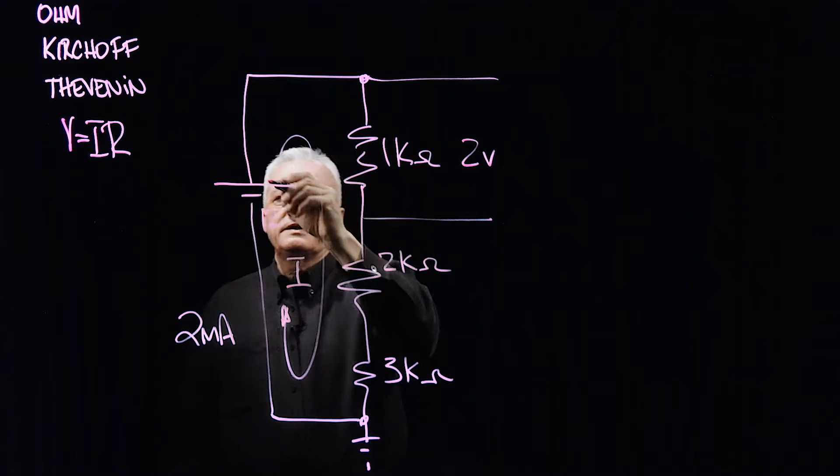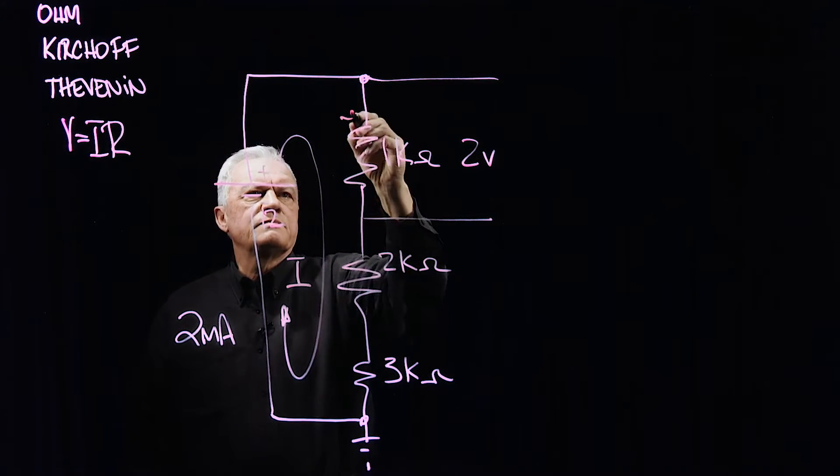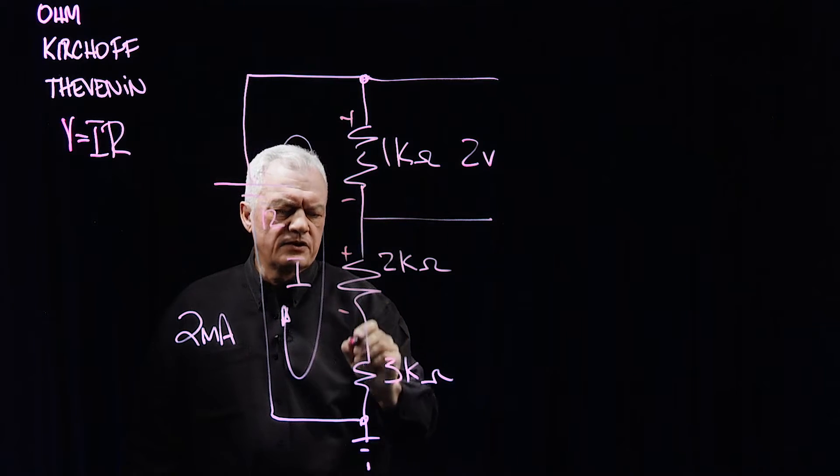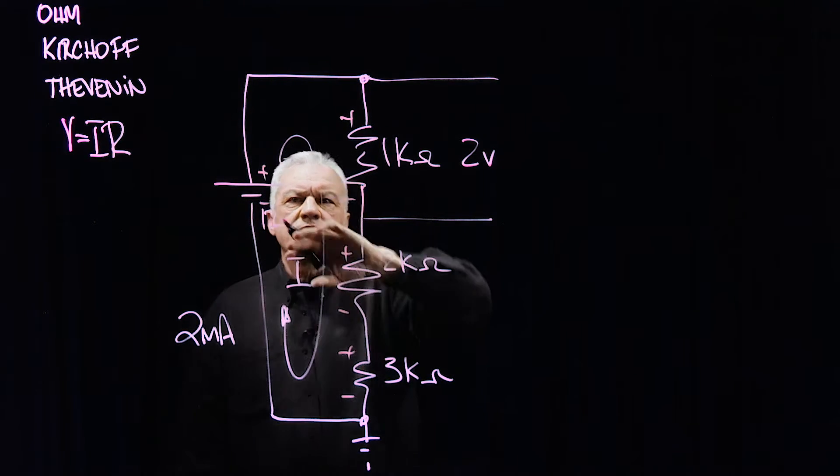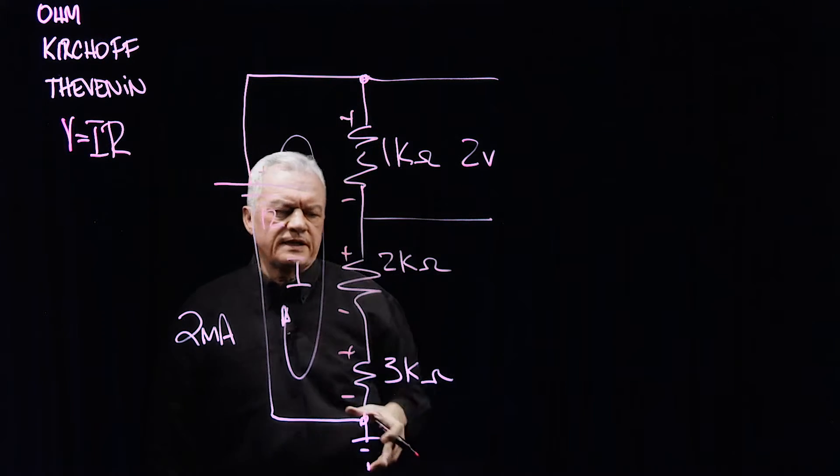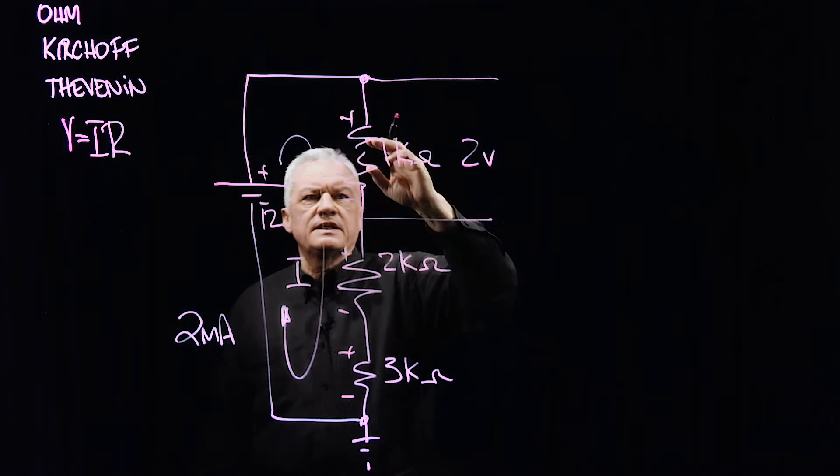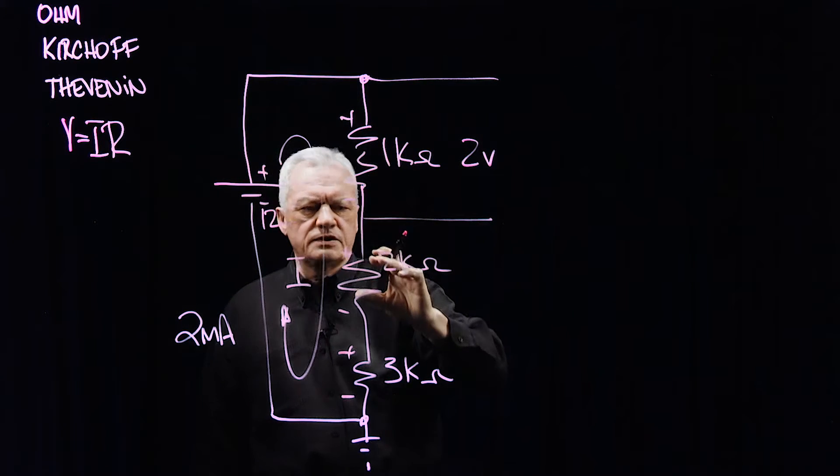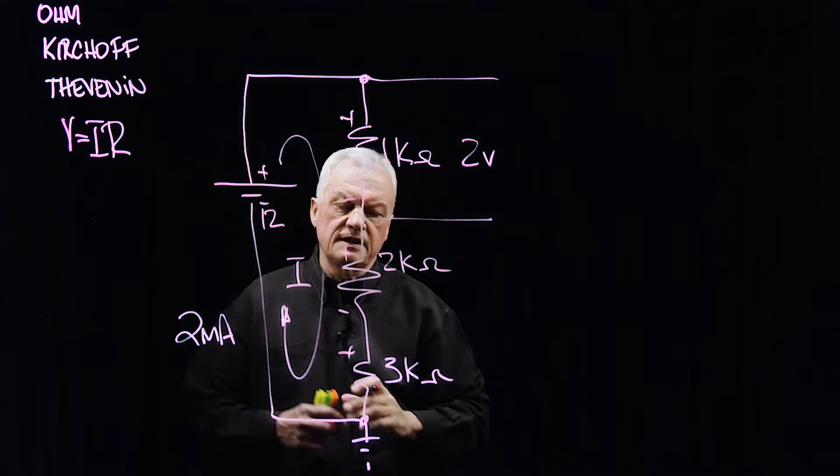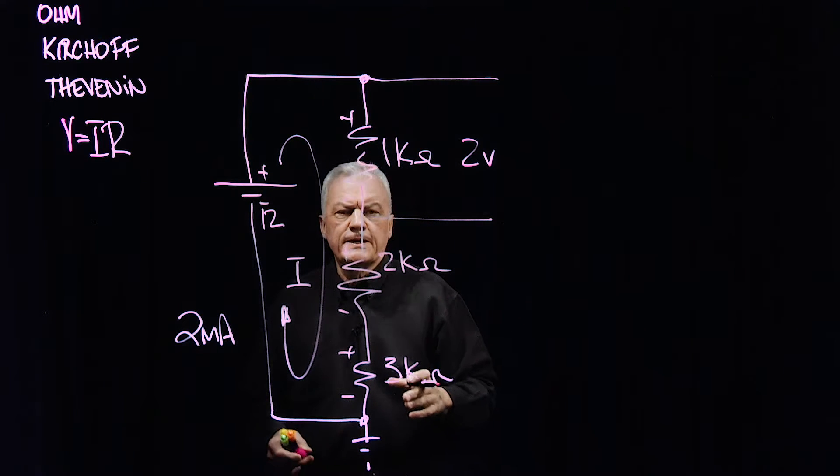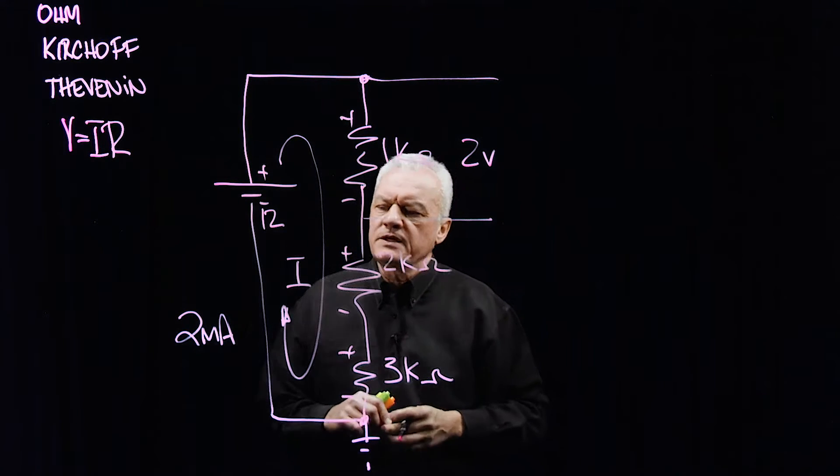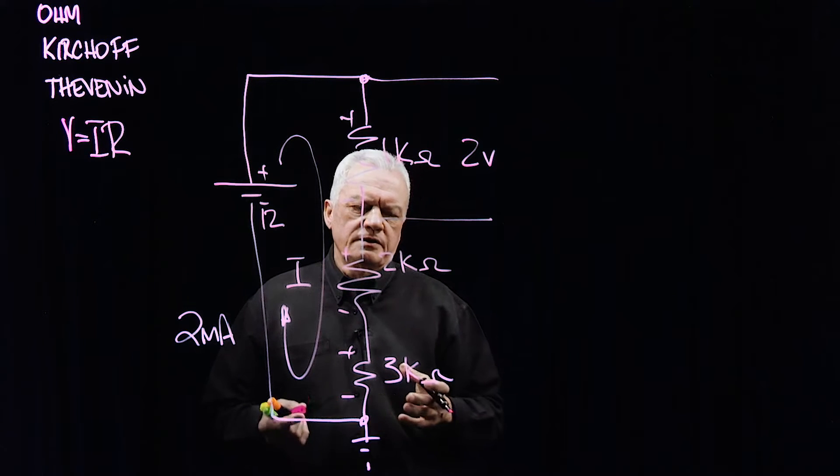Something you may notice that I do is I identify polarities when I draw my circuits. Why? Because when current enters a component, a passive component like a resistor, there is a plus side, a high side and a low side to it. So identifying the high sides and low sides becomes helpful in some other circuit types of calculations we do.